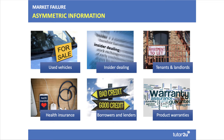A really key part of any revision on information failure is the concept of asymmetric information — where there's an imbalance in information between buyer and seller, and this imbalance can distort the choices we make. Asymmetric information is a type of information failure; they're part of the same discussion. Good examples include: the used car market where the seller knows more than the buyer, insider dealing in financial markets, tenants and landlords where the landlord knows more about the property, product warranties on washing machines or dishwashers, and credit risk in financial markets.